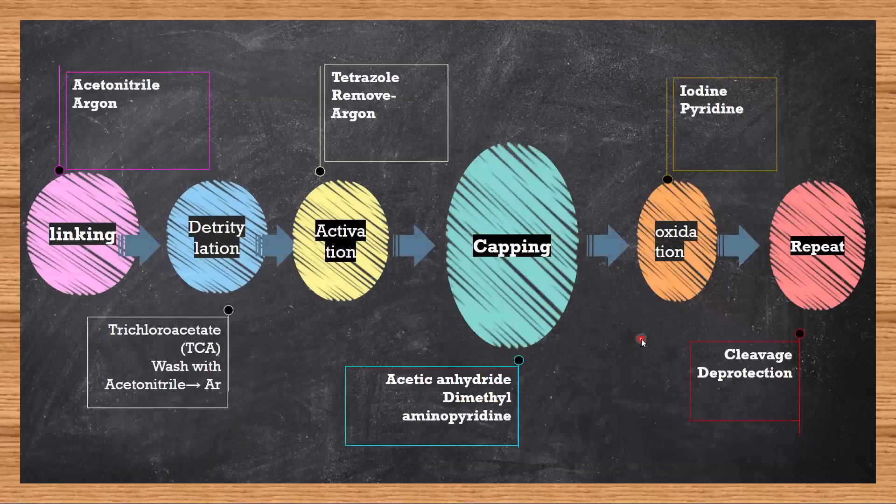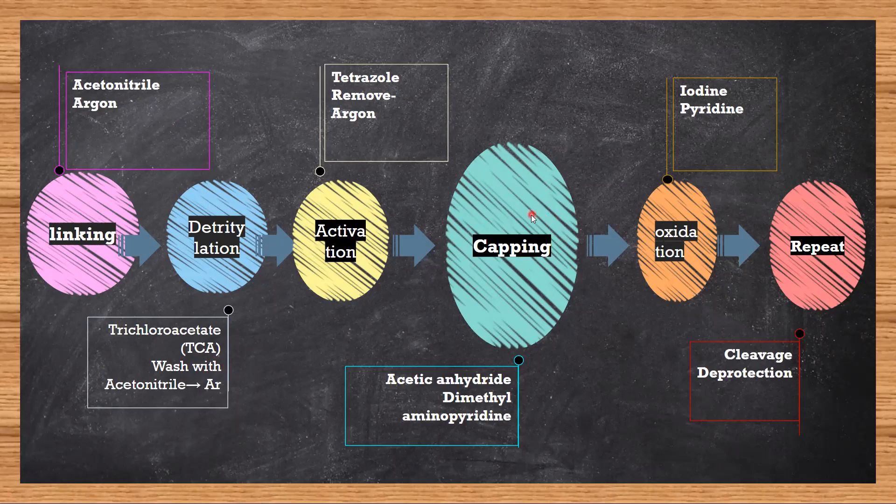How did we start? We linked the nucleotide to the support. After linking, we flush it with acetonitrile followed by argon, then detritylation with TCA, followed by washing with acetonitrile and argon. Activation by adding tetrazole, coupling follows next, then cap if any extra nucleotide didn't bind, done by using acetic anhydride and dimethylaminopyridine.